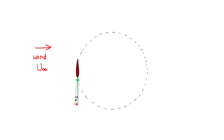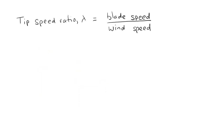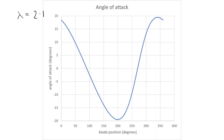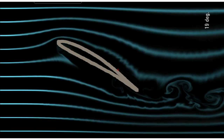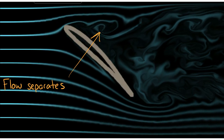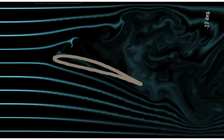As rotation continues, the angle of attack becomes negative, making the lift force act in the opposite direction relative to the blade. But since the blade is facing the other way, there's still a component of that force creating positive torque. Depending on the tip speed ratio, the angle of attack may exceed the stall angle, causing flow separation with violently swirling flow. When that happens, lift suddenly decreases, drag suddenly increases, and this turbulent flow causes significant vibrations in the blade.